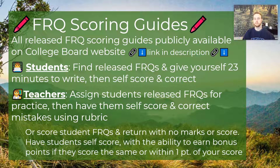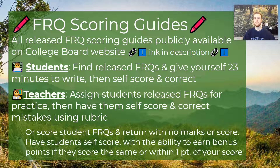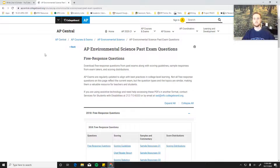Another pro tip I picked up at an AP conference from a colleague is to every once in a while score student FRQs, but don't write any feedback on the FRQ — don't give the student any feedback, and don't give them their score. Simply return it to them to correct themselves, and then give them the opportunity to earn bonus points if they can score the FRQ either perfectly — exactly as you scored it — or within one point. This is huge because it teaches students to understand what points are going to be earned and which are not.